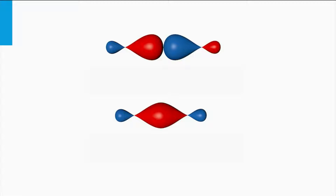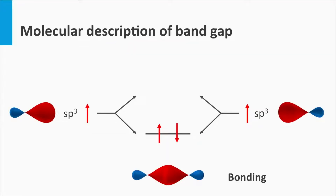Here the Pauli exclusion principle starts to play a role. Two identical electrons cannot occupy the same quantum state simultaneously. Nature splits the original sp3 energy levels into two energy levels. The lowest energy level is the bonding level, and is lower in energy than the original two individual sp3 levels. As a result, both electrons prefer to fill this state, with one electron spin-up and the other spin-down. This bonding state represents the attraction between the silicon atoms and the creation of a bond.